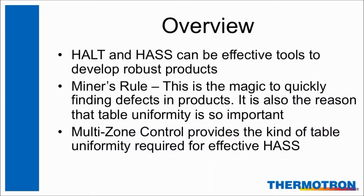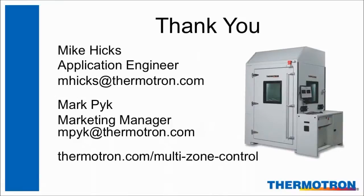In conclusion, HALT and HASS can be effective tools to develop robust products and ensure that warranty costs are low. Miner's Rule is the magic to quickly finding defects in products. It is also the reason that table uniformity is so important. Thermatron's patent-pending multi-zone control technology in our Xtreme AST system provides the kind of table uniformity required for safe and effective HASS testing. This concludes our webinar. We now have some time for questions and answers. Thank you all for sending in your questions during the presentation. If you still have questions, feel free to send them in.